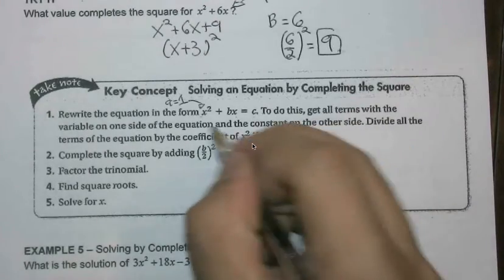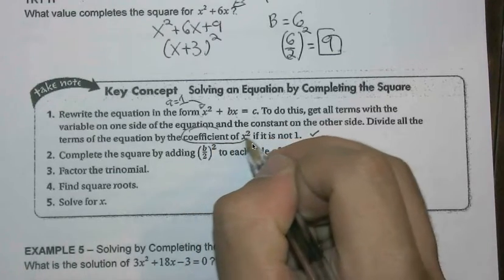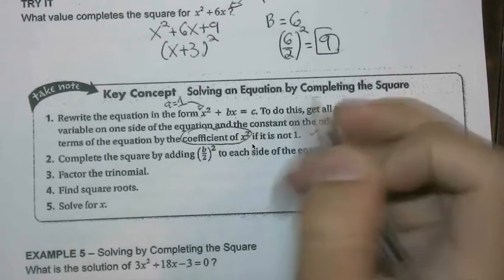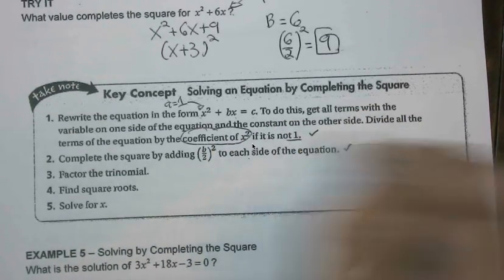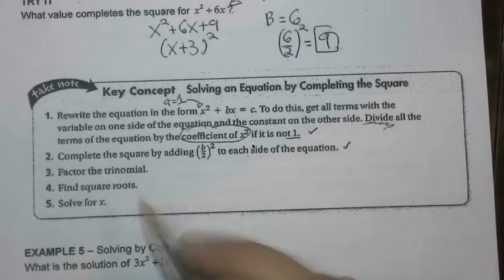Please keep in mind that the coefficient for x squared has to be 1. And if it's not 1, how we can work around that is by dividing everything by that a coefficient.